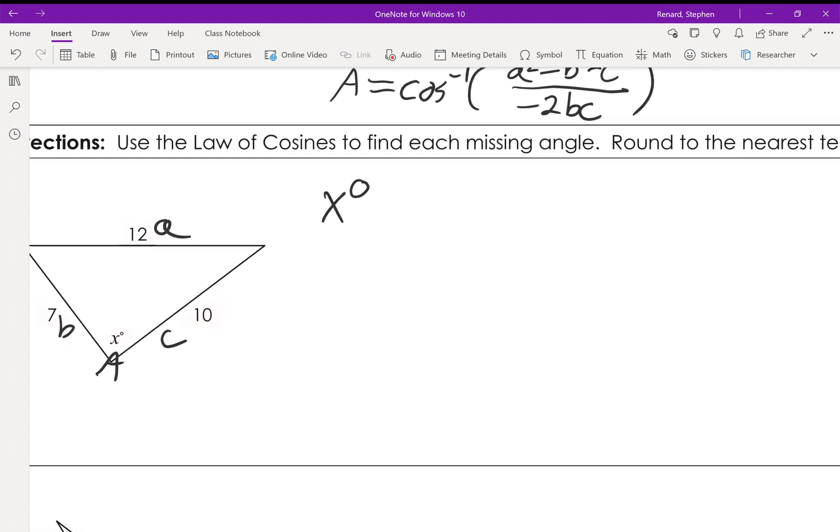So we know that x degrees, because that's what A is, equals the inverse cosine of 12 squared minus 7 squared minus 10 squared all over negative 2 times 7 times 10. So again, we're just going to go ahead and plug that into our calculator. So we got 144 minus 49 minus 100 all over negative 140.